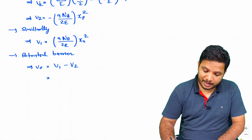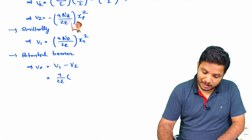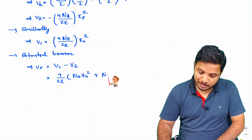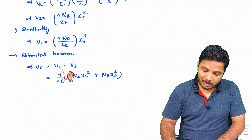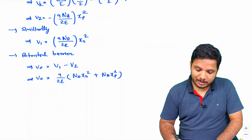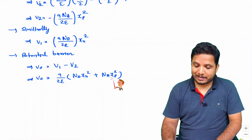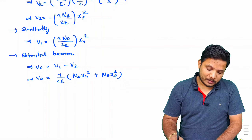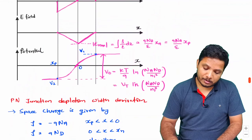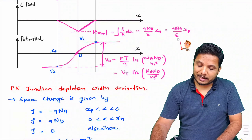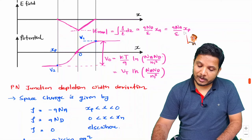To proceed, I use the charge neutrality condition derived in my previous video: Emax = (Q·Nd/ε)·Xn = (Q·Na/ε)·Xp, which gives Nd·Xn = Na·Xp. This allows us to express Xp in terms of Xn.